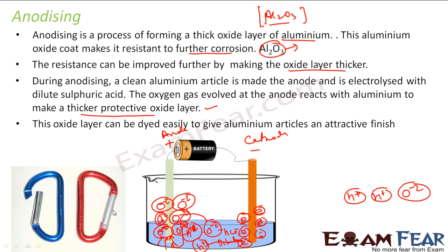To recap: in this setup the anode is positive, so water breaks into hydrogen and oxygen ions. The oxygen ion is attracted towards the anode, and the hydrogen ion towards the cathode. We focus on the anode, where there is a large concentration of oxygen ions, meaning oxidation can happen, and Al2O3 is created.